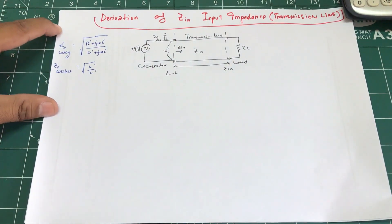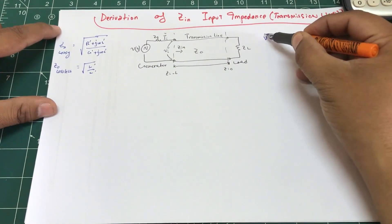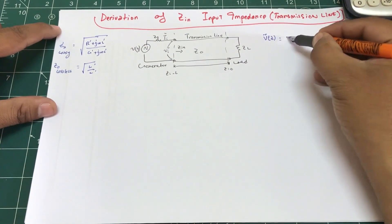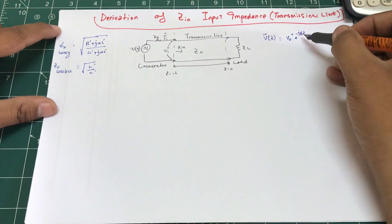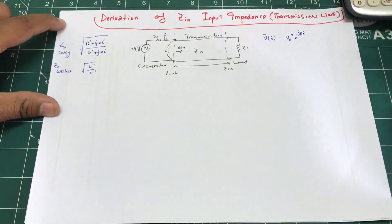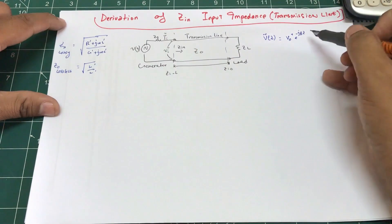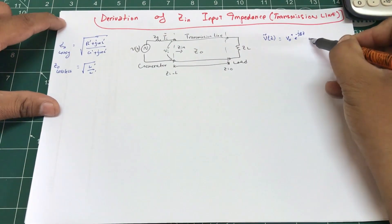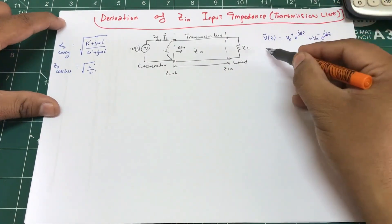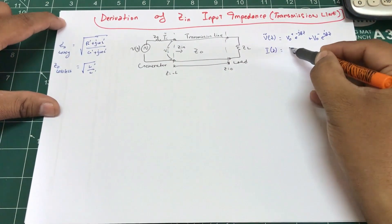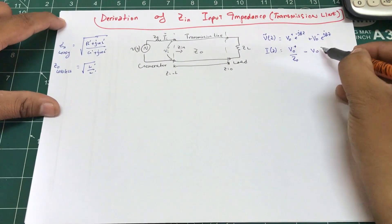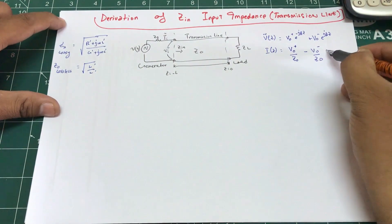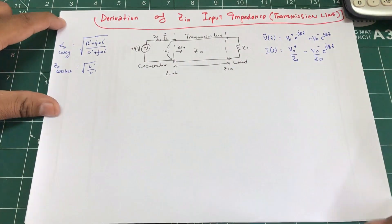Let's start manipulating the equations. Recall that voltage is given by V(z) = V₀⁺ e^(−jβz) + V₀⁻ e^(jβz). We're using β rather than γ because we're considering a lossless line. For current, I(z) = (V₀⁺/Z₀) e^(−jβz) − (V₀⁻/Z₀) e^(jβz).